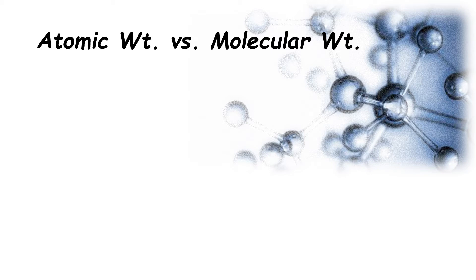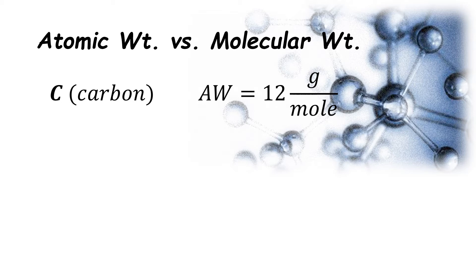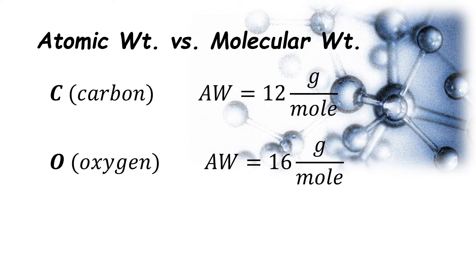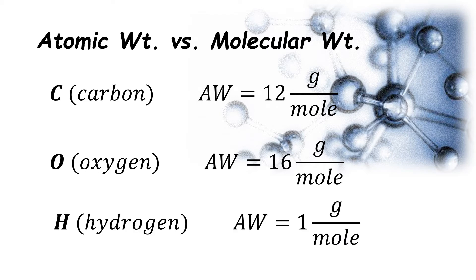Before we proceed with the computation for determining the number of moles of a substance, let us first discuss the two basic concepts of Atomic Weight and Molecular Weight. Atomic weight refers to the individual mass of an element, while molecular weight is simply the sum of all atomic weights of a compound. For example, the atomic weight of carbon is 12 grams per mole, oxygen is 16 grams per mole, and hydrogen is 1 gram per mole.